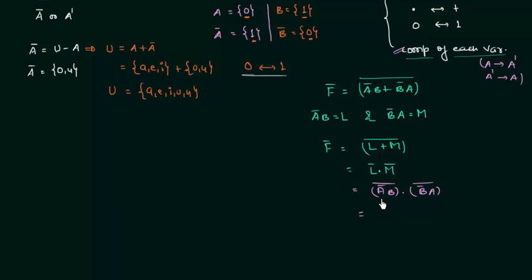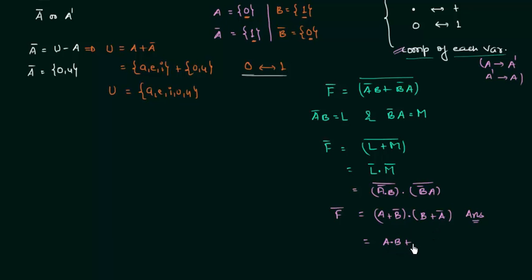We open these using De Morgan's law. (A-complement)-complement gives A, the AND becomes OR, B gives B-complement — so L-complement = A + B-complement. Similarly, (B-complement)-complement gives B, AND becomes OR, A gives A-complement — so M-complement = B + A-complement. Combining: f-complement = (A + B-complement)·(B + A-complement). Expanding: A·B + A·A-complement + B-complement·B + B-complement·A-complement. Since A·A-complement = 0 and B-complement·B = 0, we get f-complement = A·B + A-complement·B-complement.